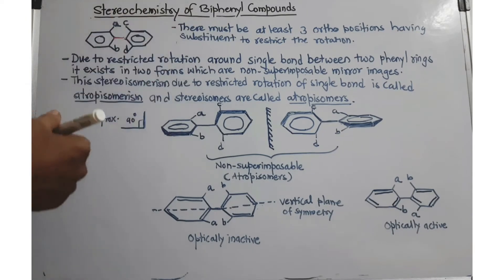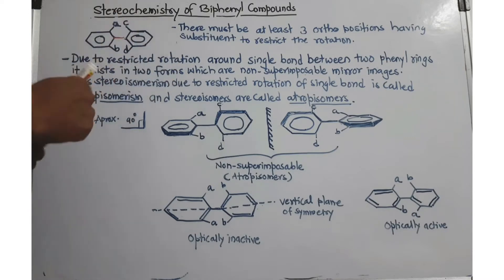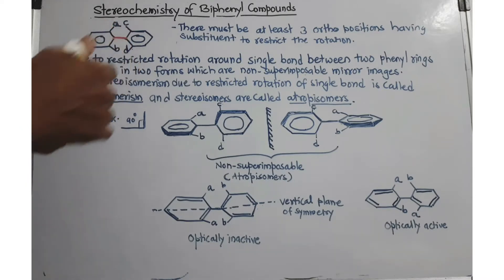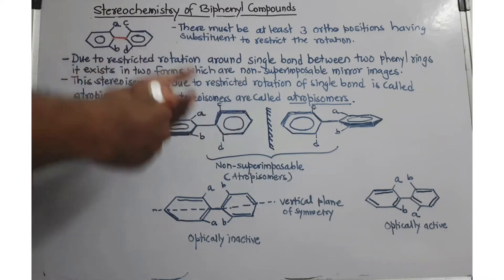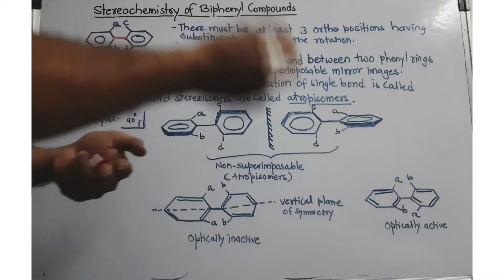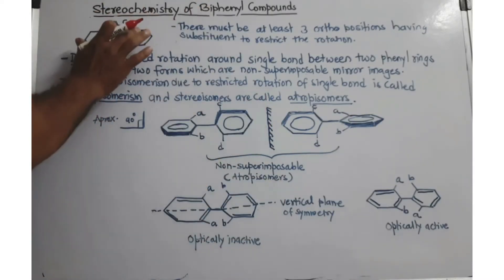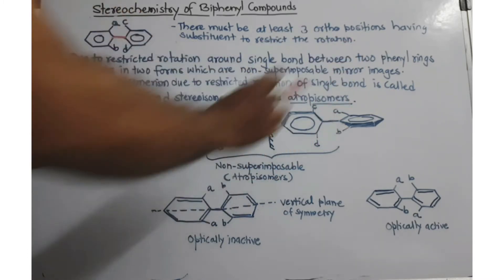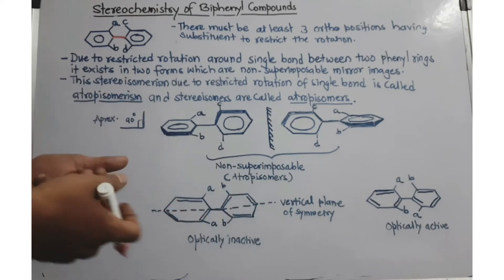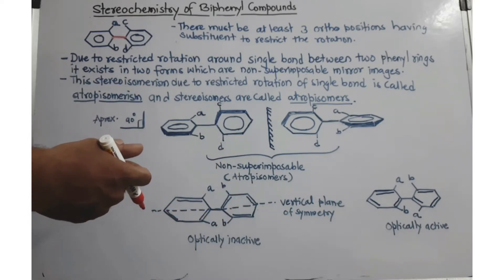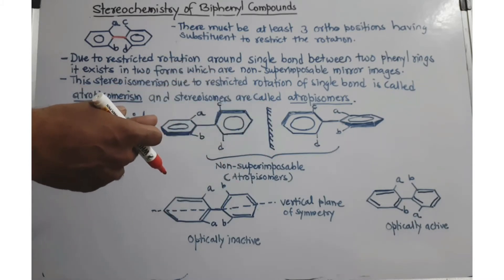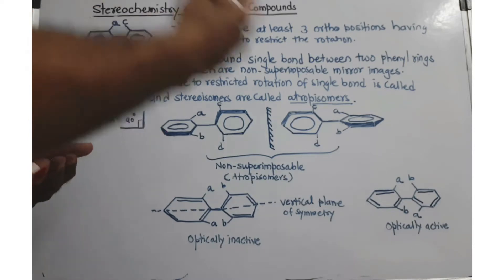Before we start our discussion, let us look at the structure of the biphenyl compound. There are four ortho positions — A, B, C, and D — and the two rings are joined by a single bond. If there is a single bond, there is free rotation. If there is free rotation, this biphenyl cannot form a non-superimposable mirror image, and therefore cannot show optical isomerism or molecular chirality.